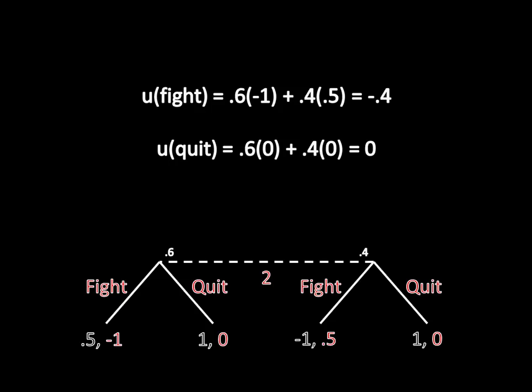Her expected utility for quitting is straightforward. It doesn't matter whether Player 1 is a strong or weak type — she receives a payoff of 0 in either case. So her utility for quitting is 0. Comparing those two, her utility for fighting is worse than her utility for quitting, so she has to quit.